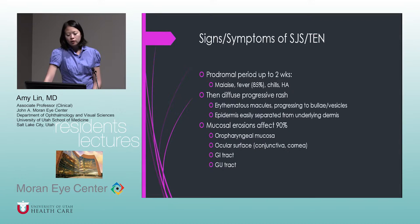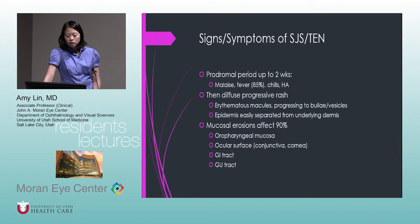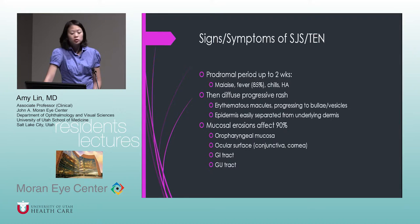After this two-week period, they get a very diffuse progressive rash. Erythematous macules progress to bullous vesicles, the epidermis is very easily separated from the underlying dermis, and mucosal erosions affect 90% of patients, affecting all mucosal areas.